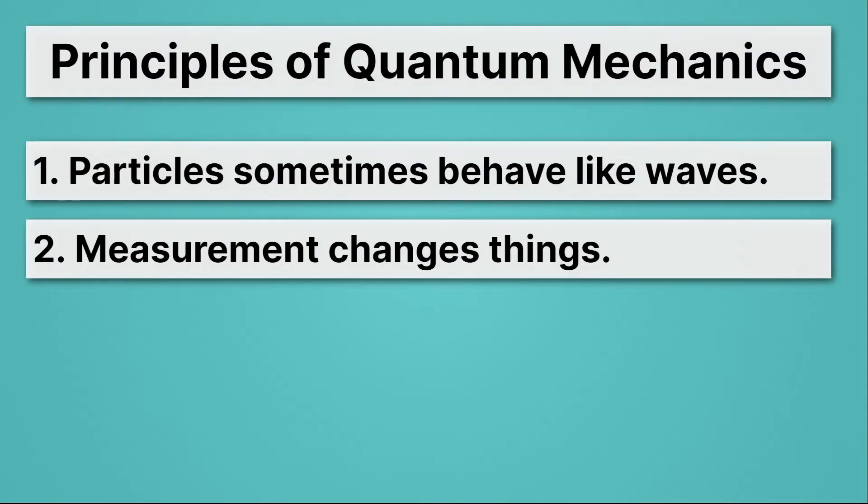The second principle I want to highlight is that measurement changes things. Traditionally, when I measure the temperature or speed of something, I don't really change it. Or if I do, I change it just a little. That's not true in the quantum world. In the quantum world, measurement changes things entirely.